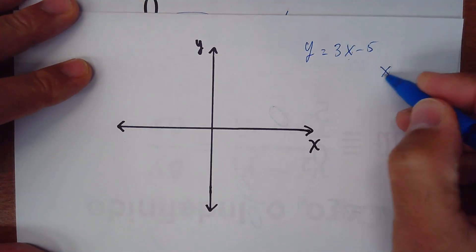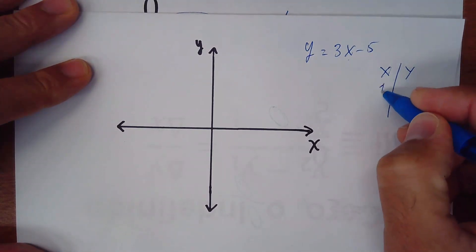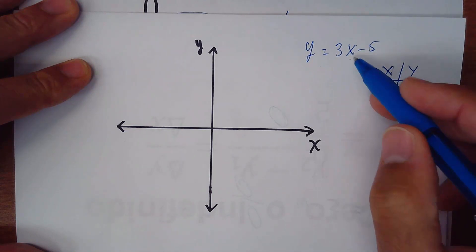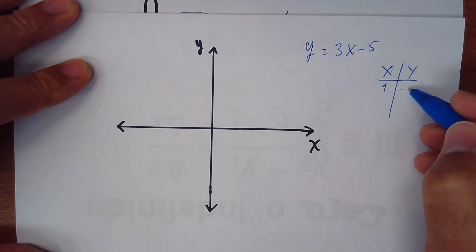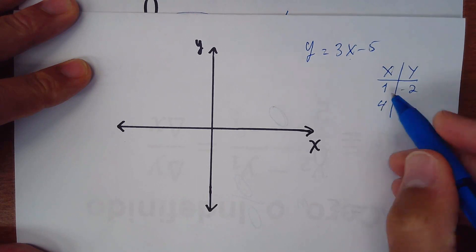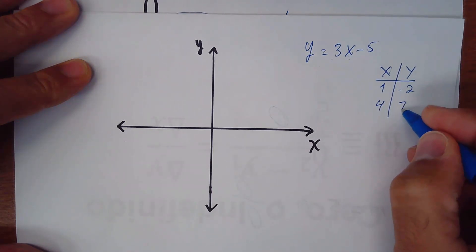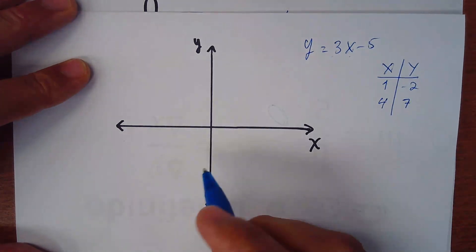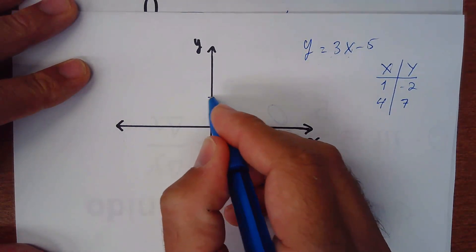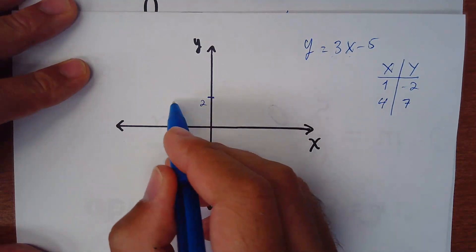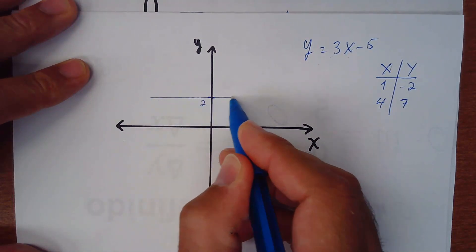So if x is 4, 3 times 4 is 12 minus 5 is 7. So y depends on the x. What happened, for example, in this, let's suppose this is a 2 and we made this graph.